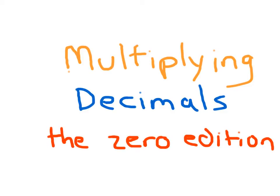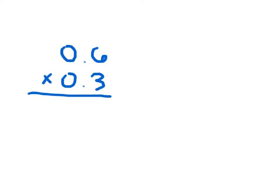Let's work with multiplying decimals where there are zeros in our factors. The approach we've been taking is looking at the number of decimal places within each of those factors. There's one decimal place in one factor and one decimal place in the other, so within our answer we'll have two decimal places.